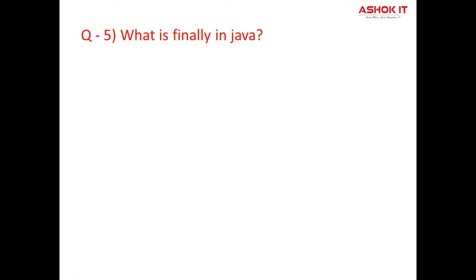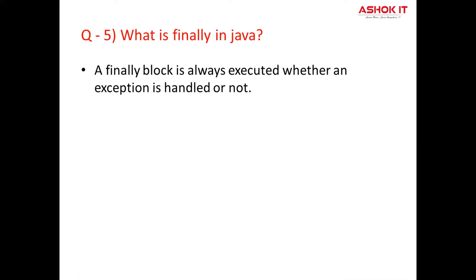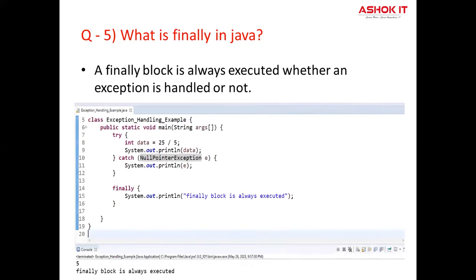Question number five: What is finally in Java? A finally block is always executed whether an exception is handled or not. The finally block always executes when the try block exits. This ensures that the finally block is executed even if an unexpected exception occurs. Finally is useful for more than just exception handling — it allows the programmer to avoid having cleanup code accidentally bypassed by a return, continue, or break statement. The finally block may not execute if the JVM exits while the try or catch code is being executed. If you observe this program, the finally block is always executed, either whether an exception occurs or not.